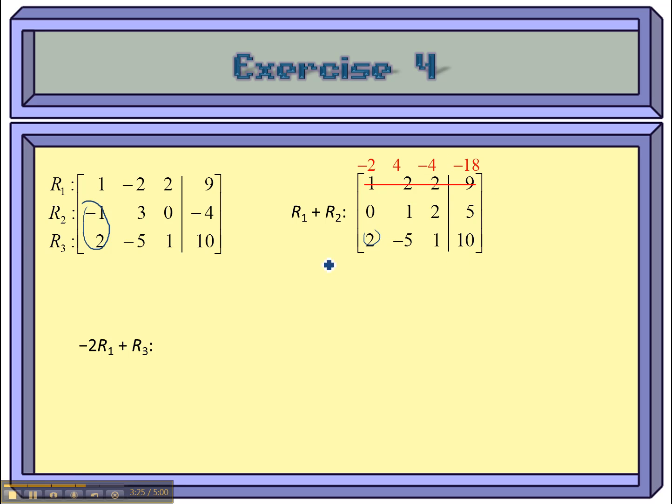So, row one's going to stay the same. Row two's going to stay the same. I'm just going to change r3. Negative two and two is going to be a zero. A four and negative five is going to be a negative one. A negative four and a one is a negative three. And negative 18 and 10 is that negative eight.